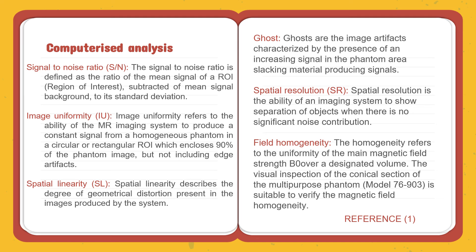Spatial linearity describes the degree of geometrical distortion. Ghost refers to image artifacts characterized by a percent increase in signal in the phantom area. Spatial resolution is the ability of the imaging system to show separation of objects when there is no significant noise contribution. Field homogeneity refers to the uniformity of the main magnetic field. The phantom module 72 is suitable to verify the magnetic field homogeneity. Thank you very much.